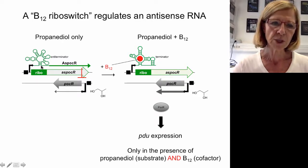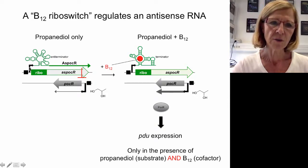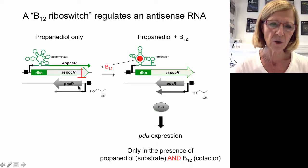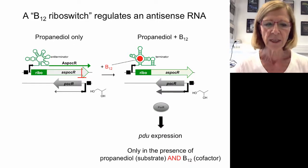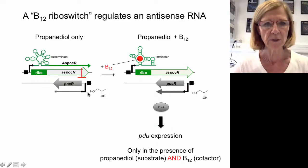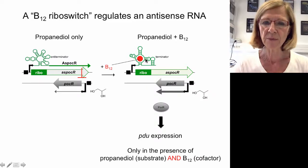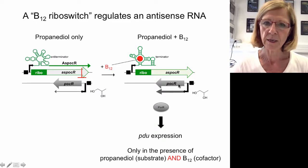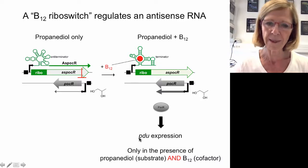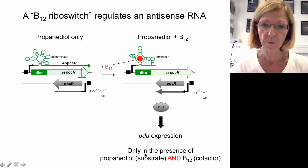The B12 riboswitch is upstream of the non-coding antisense anti-PocR. This antisense regulates the expression of PocR, which is the activator of genes involved in the catabolism of propanediol. In the absence of B12 there is no PocR made. In the presence of B12, the riboswitch binds B12 so the transcript is short and there is no antisense opposite to PocR, allowing expression of propanediol utilization genes — thus expressed only in the presence of both propanediol and B12.